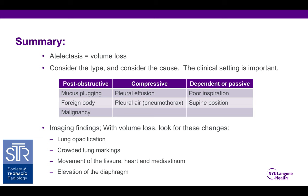In summary, atelectasis simply means volume loss. When you see atelectasis, consider the type and the cause — the clinical setting is important. Mucus plugging, foreign body aspiration, or new malignancy suggest post-obstructive atelectasis. Compressive atelectasis may be related to adjacent effusion. Dependent or passive changes relate to supine position or low inspiration. With imaging and volume loss, look for lung opacification, crowded lung markings, and if there's enough volume loss, movement of the fissure, heart, or mediastinal contours, and elevation of the diaphragm.